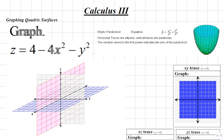Let's graph the quadratic surface defined by the equation z equals 4 minus 4x squared minus y squared. To graph this quadratic surface, we'll graph its representation in three separate traces. In other words, we'll graph the cross-section of our graph in the xy-plane, in the yz-plane and in the xz-plane.